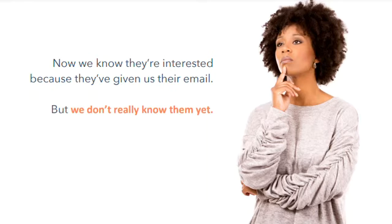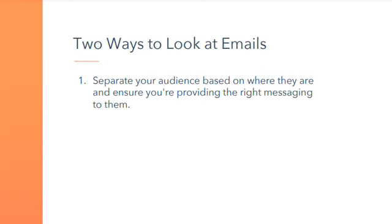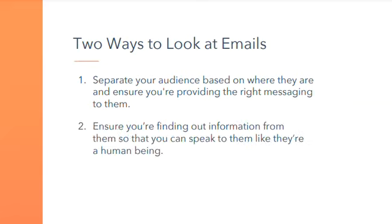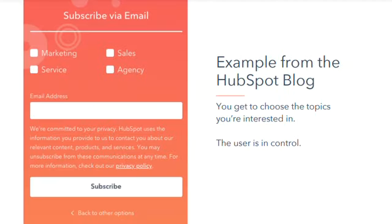We're going to gather information and in a very transparent way, explain to them that we want to get to know them more. We're going to ask them questions to guide them through the process so we can then deliver messages they're actually looking for — which would be self-regulated interest. Separate your audience based on where they are. A good example of this is when you receive an email and get to choose the topics you're passionate about, so it feels like the user is actually in control. You're asking the individual what they're interested in and then providing that service to them.